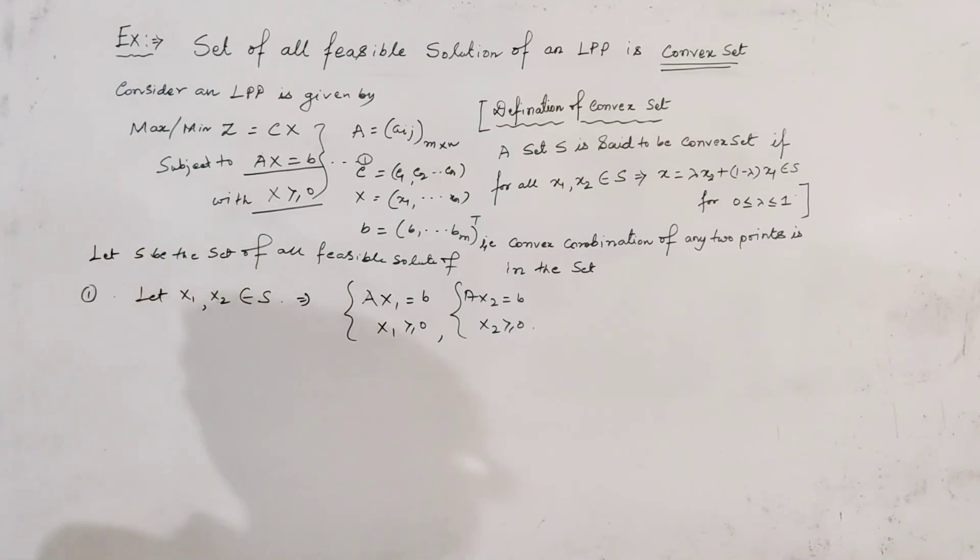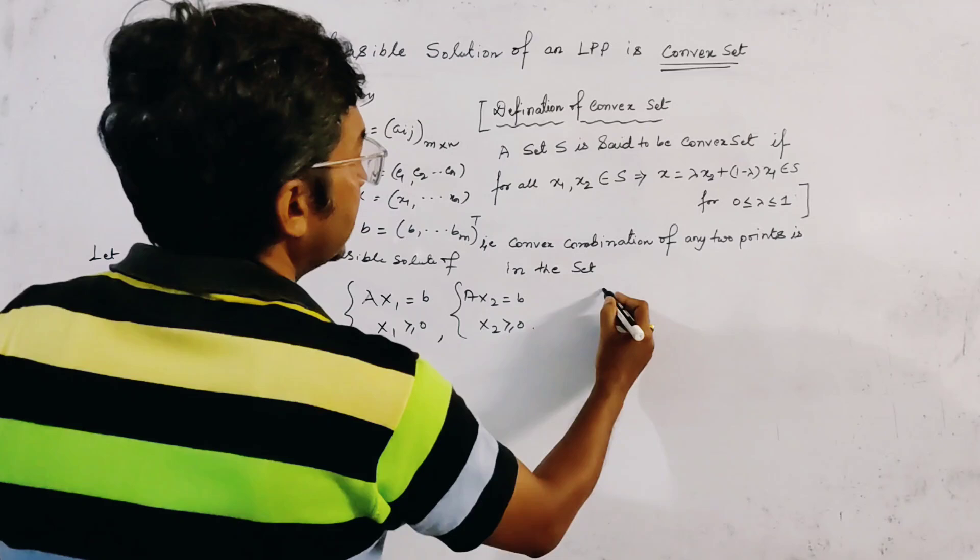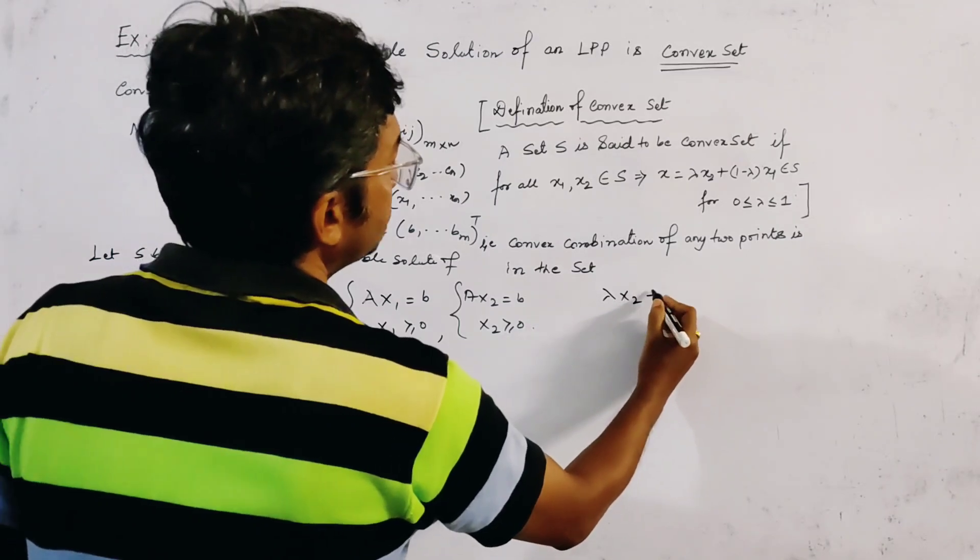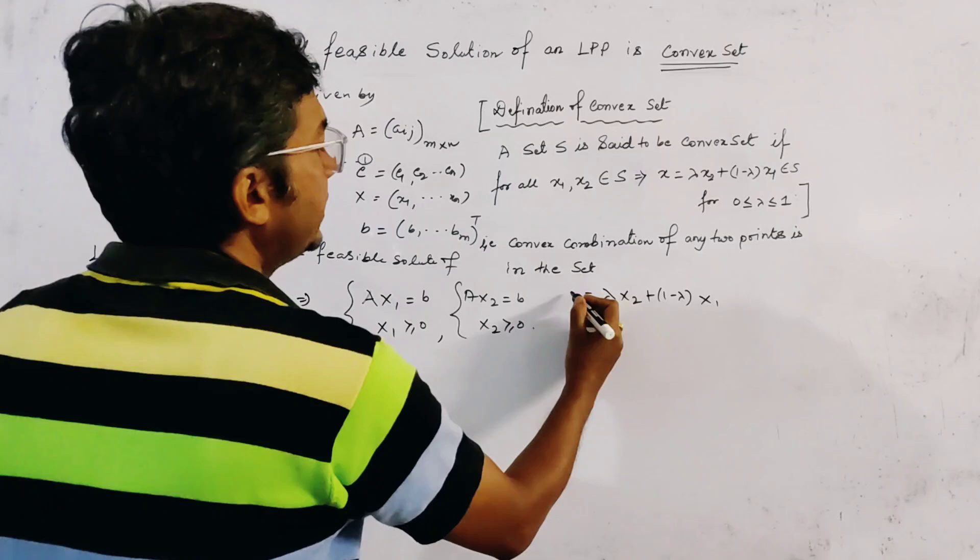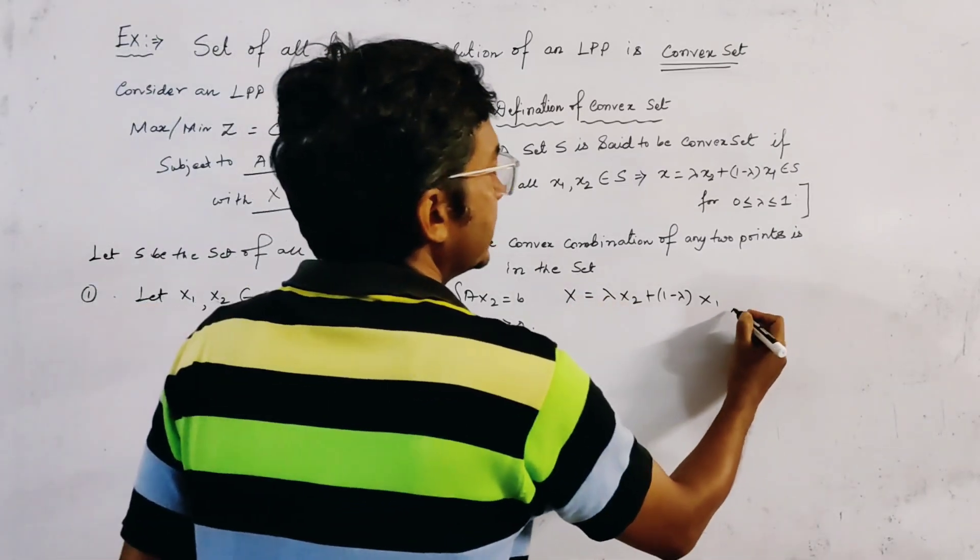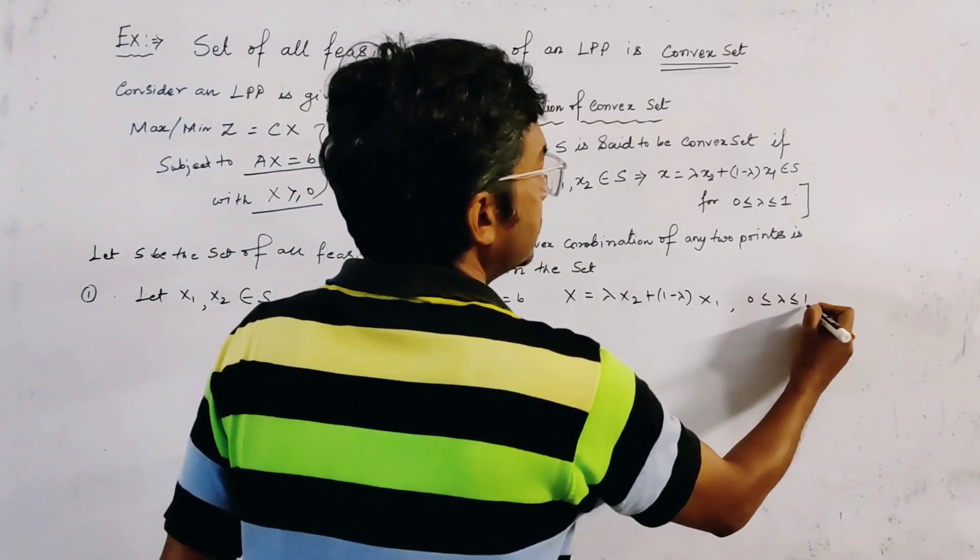Now, we make lambda, X2, plus 1 minus lambda, equal to X1. Let it be X, where 0 less equal to lambda, less equal to 1.